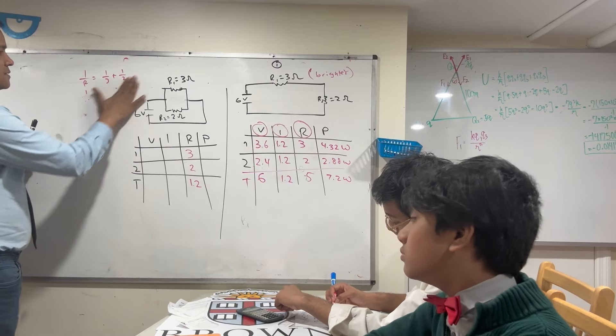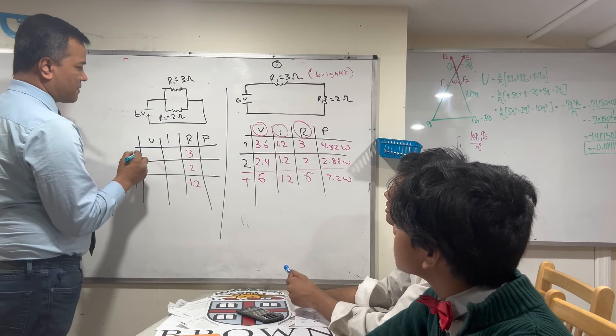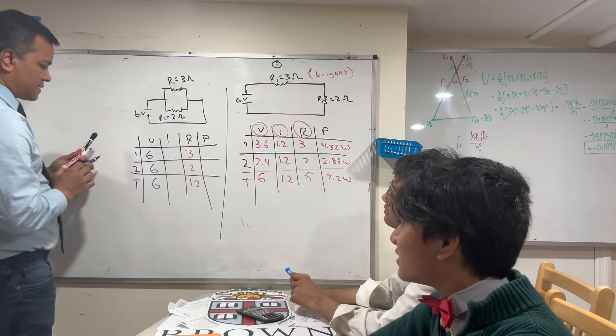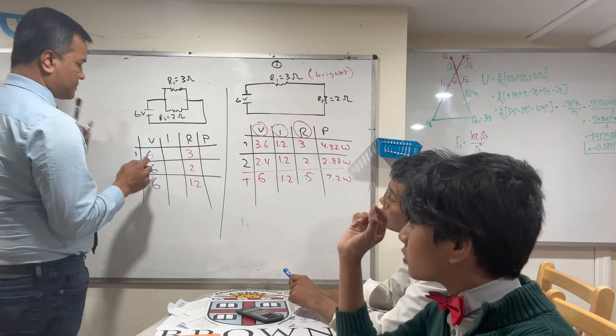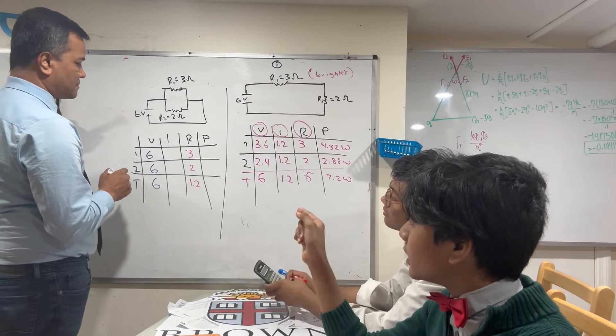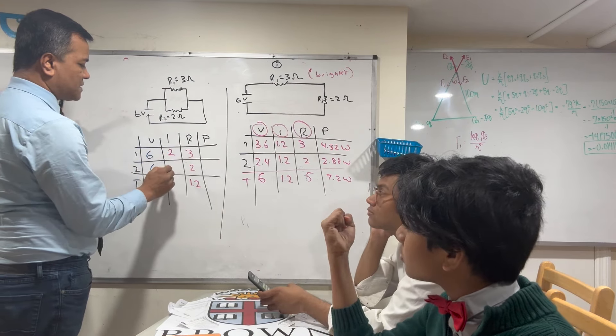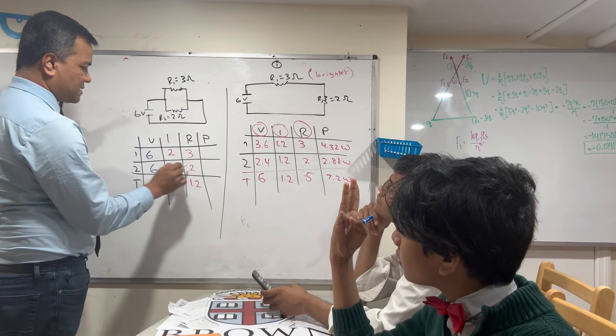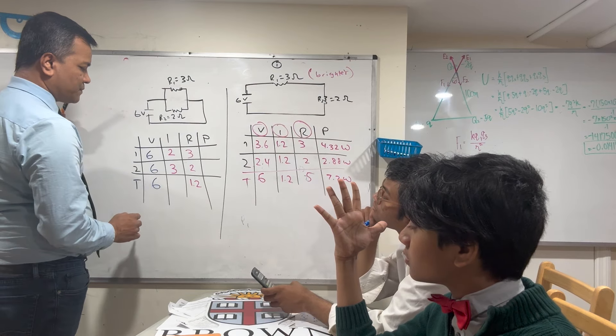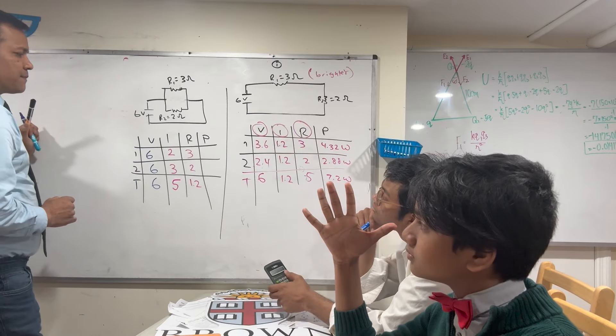I'll take voltage. Voltage will be 6. Isaac, current? Current is equal to the voltage divided by resistance, so it's going to be 2 there, 3 there, and 5 total. 6 divided by 2, and 6 divided by 1.2 is 5.